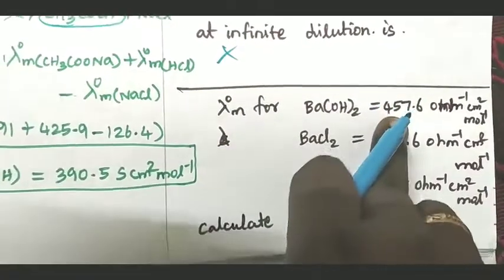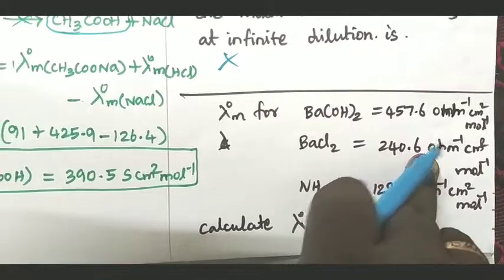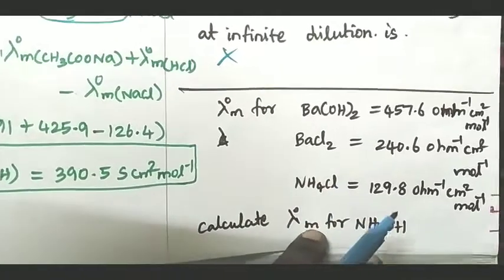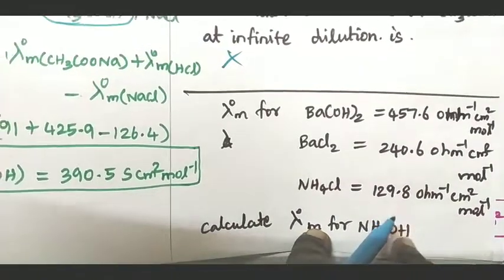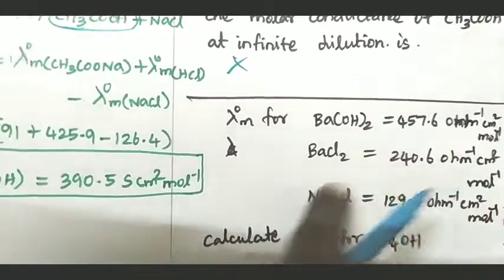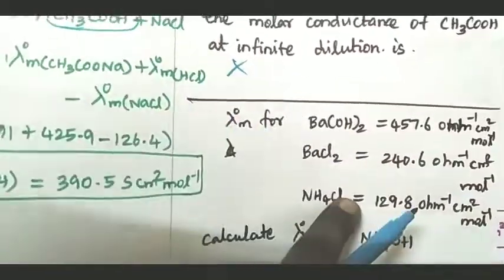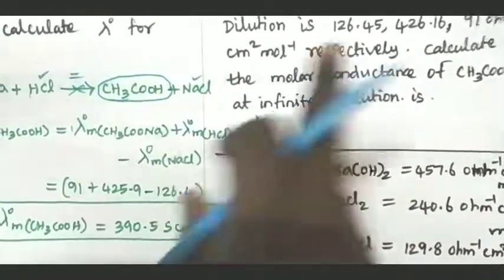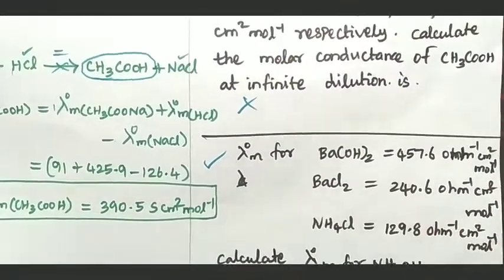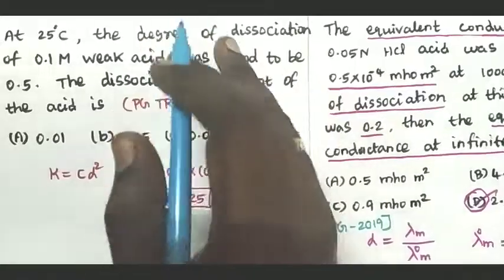Another problem: lambda-nought of barium hydroxide is 456.6, barium chloride is 240.6, and ammonium chloride is 129.8 cm² mol⁻¹. The unknown value is for ammonium hydroxide. We combine all three given values to find the molar conductivity of ammonium hydroxide.